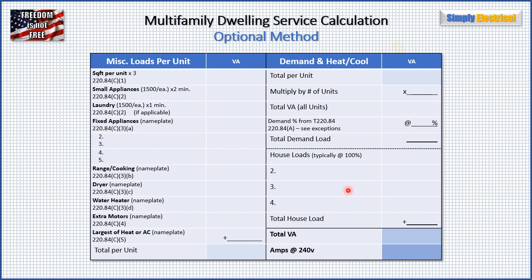If we have any house loads, we would add those here. I treat house loads separately — I actually have another video on that. House loads are done with the standard method, not the optional. For our examples, we'll take our demand load as our total VA, divide by our voltage to get our amps and service size, which we can then use to size feeders, conduit, and meter packs. Don't worry if this is going too fast — that's what this video is about, it's the Crash Course. For more detail, please see my deep dive series where I go through every step meticulously with every code reference.